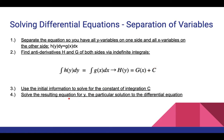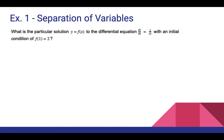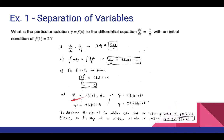Lastly, you solve the resulting equation for y, giving you your particular solution to the differential equation. Example one: What is the particular solution y equals f(x) to the differential equation dy/dx equals 2 over xy, with initial condition f(1) equals 2? We cross-multiply so that all y variables are on the left-hand side and all x variables are on the right-hand side.